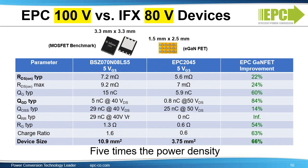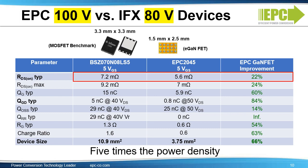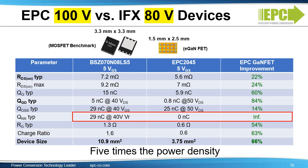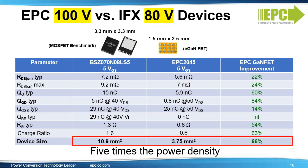If we compare the performance of EGAN FETs versus the benchmark silicon MOSFET, the RDS-ON of the GAN device is 22% smaller, QGD is 84% smaller, QG is 60% smaller, and QRR is zero. Additionally, the EGAN FET is one-third of the device size. Please note that the EPC FET is rated 100 volts, and we compared it with an 80-volt silicon FET. Overall, EGAN devices offer five times the power density.